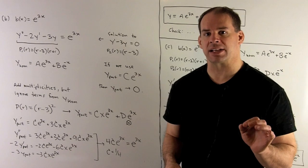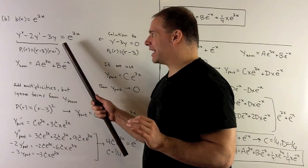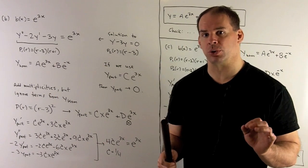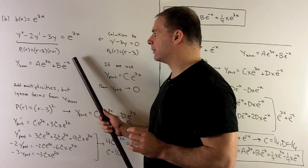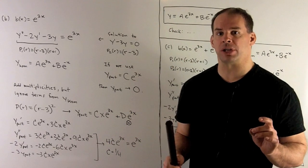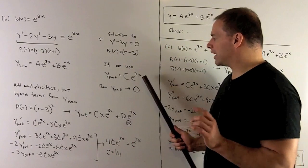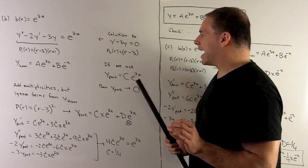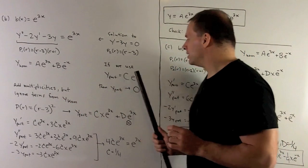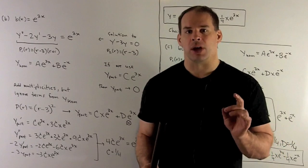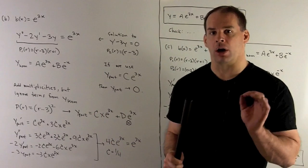Now consider b(x) = e^(3x). The left-hand side is unchanged, so the homogeneous part is again a·e^(3x) + b·e^(-x). For the particular solution, if we naively try c·e^(3x), we note that e^(3x) is already part of the homogeneous solution, so applying the left-hand side operator to c·e^(3x) always gives 0 — meaning no value of c can produce e^(3x) on the right.